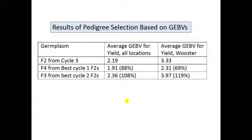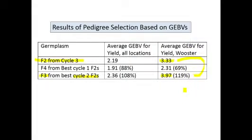We have looked at this in our maize breeding program. From the third cycle of genomic selection, the average yield breeding value of the F2 individuals at one location in Worcester, Ohio was 3.33. But if I looked at F3 individuals derived from the best cycle 2 F2s, their average breeding value was almost 4 — which is 19% greater. So these F2-derived families — when you pick the ones with the best and most desirable breeding values — allow you to do pedigree selection within them by getting their DNA and estimating their breeding values.